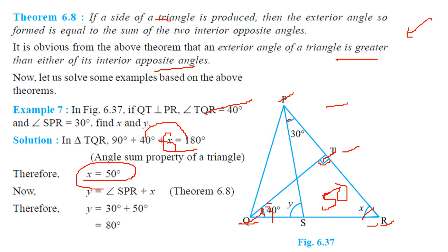Now for y: this is the exterior angle, and the exterior angle equals the sum of the interior opposite angles. So y equals 30 plus x. Since x was found to be 50 degrees, y is simply 30 plus 50, which equals 80 degrees.